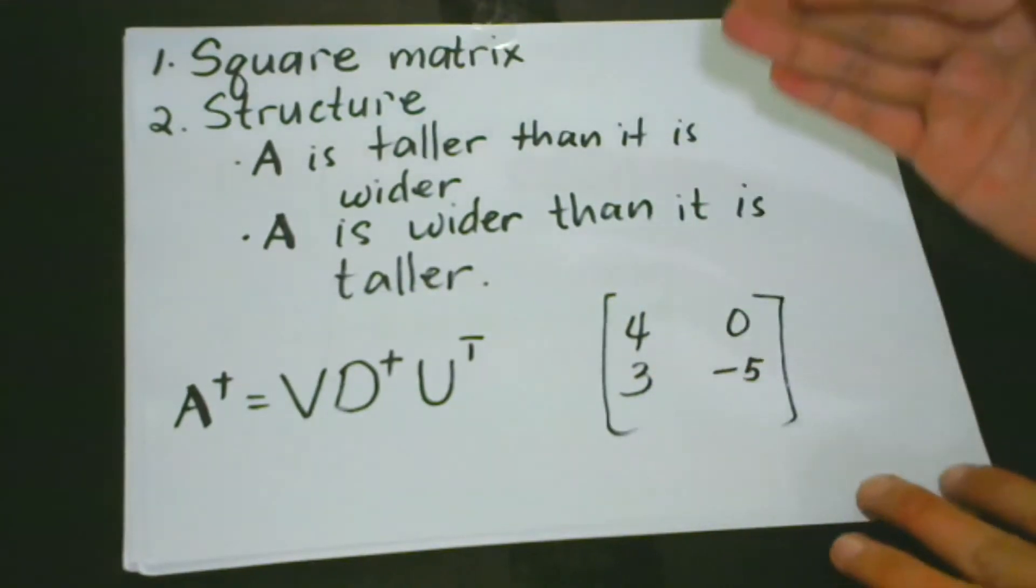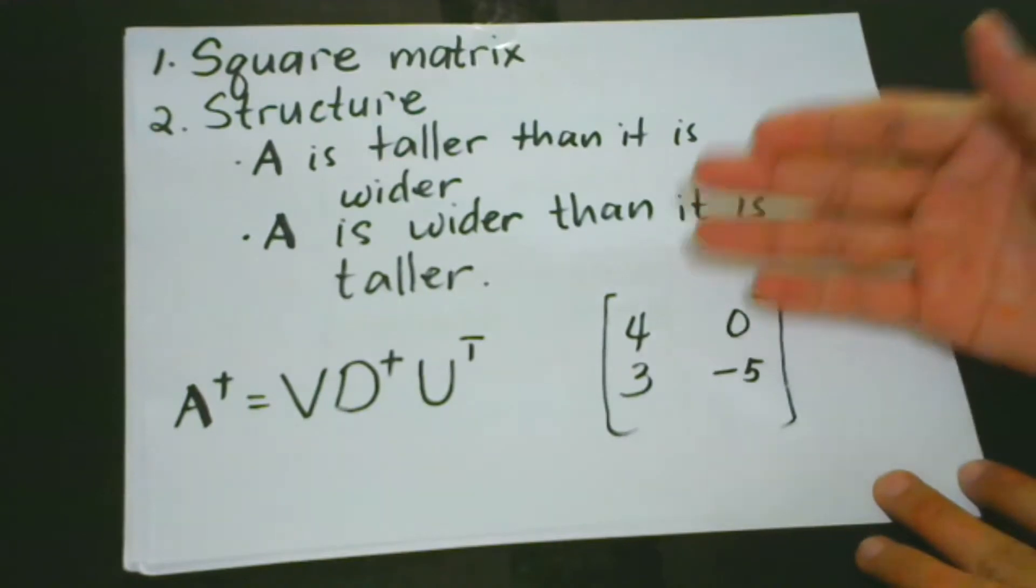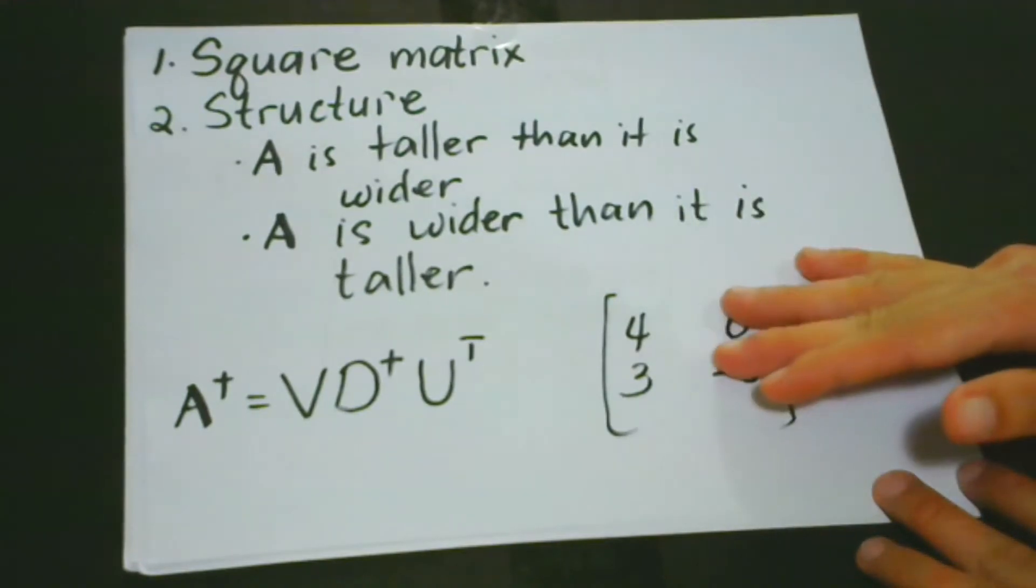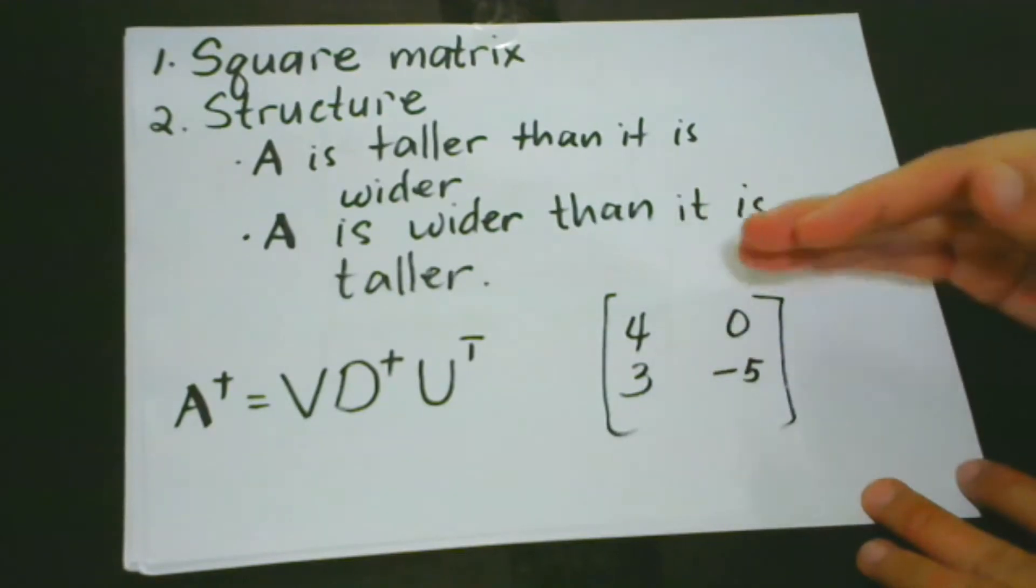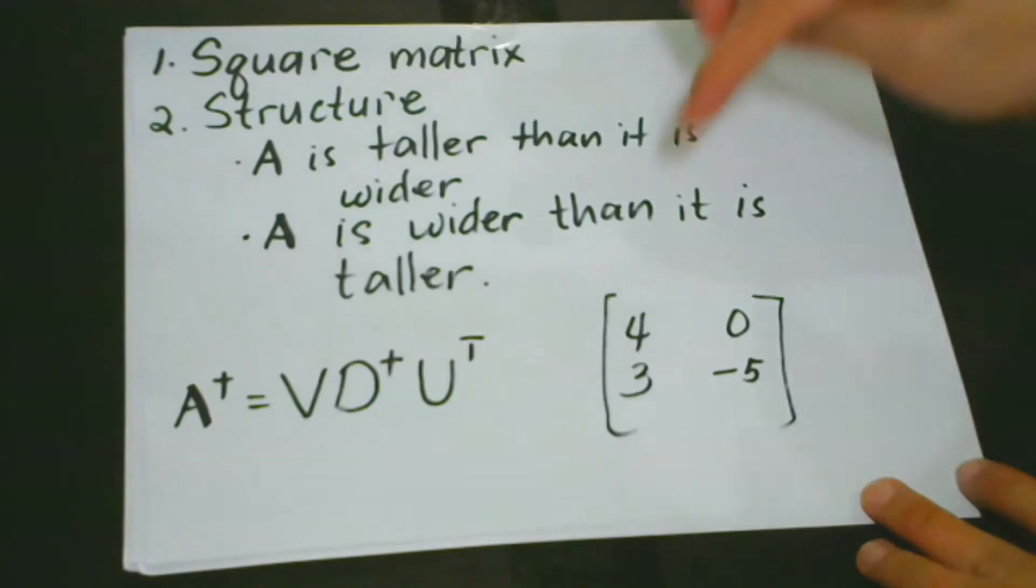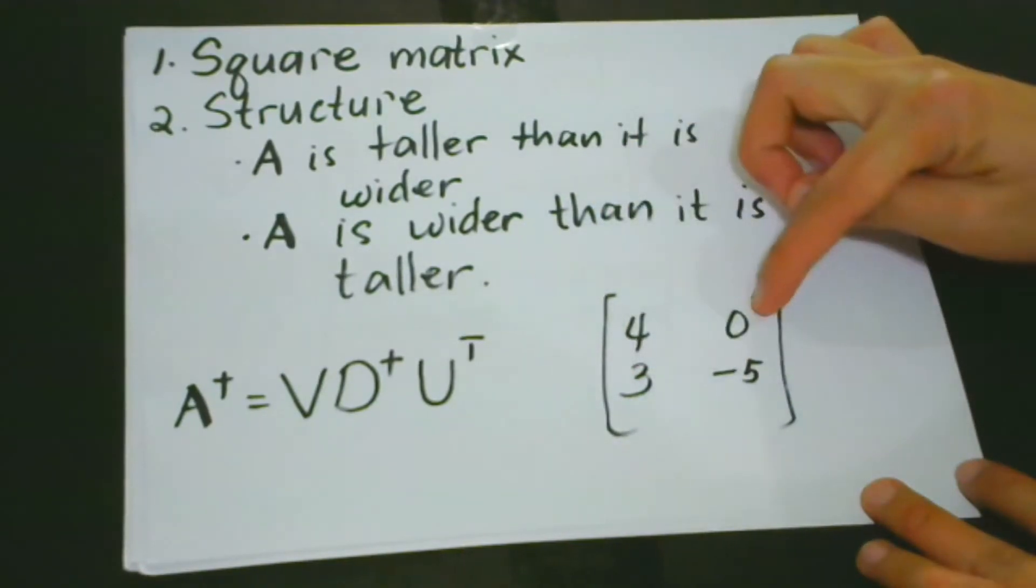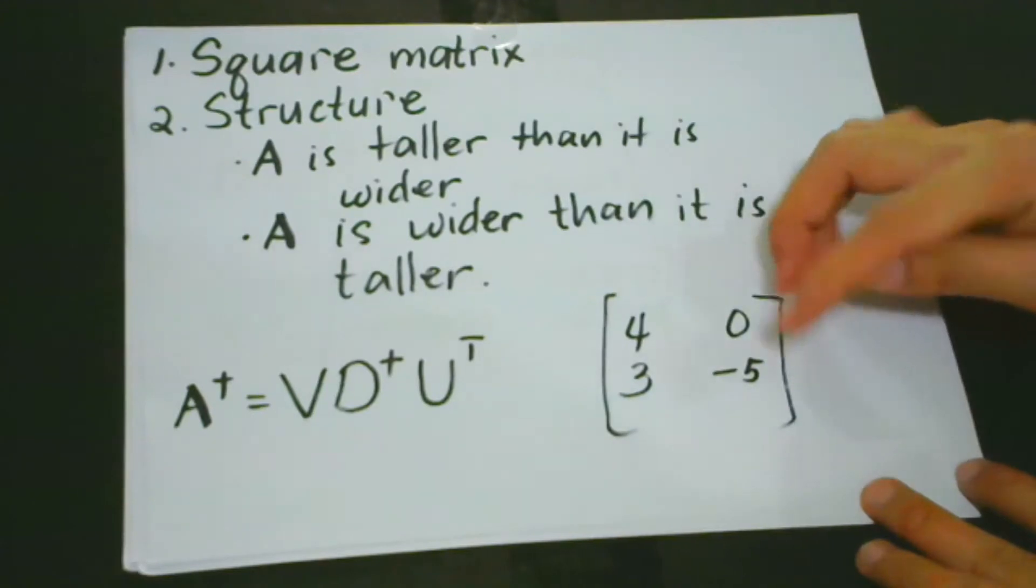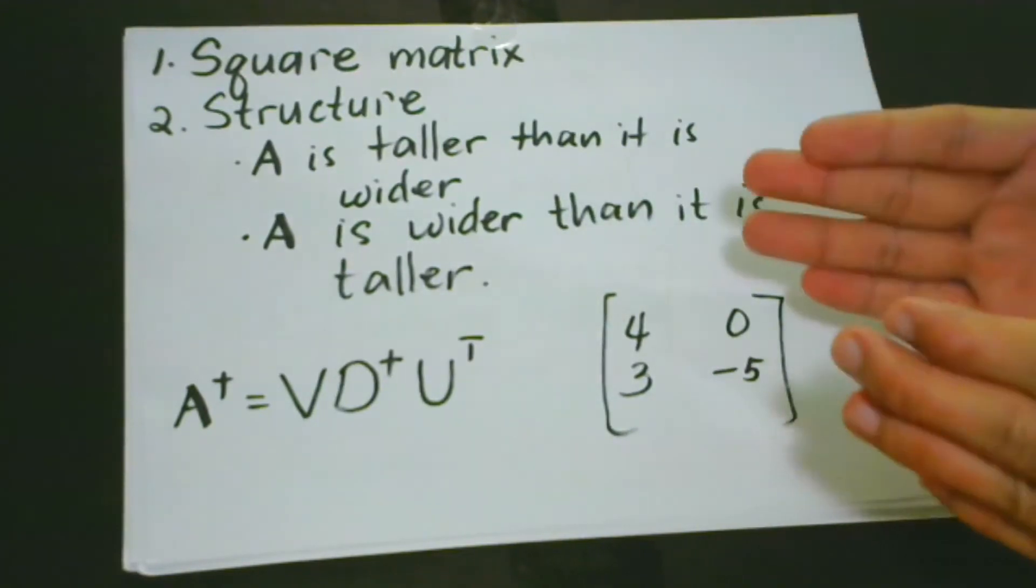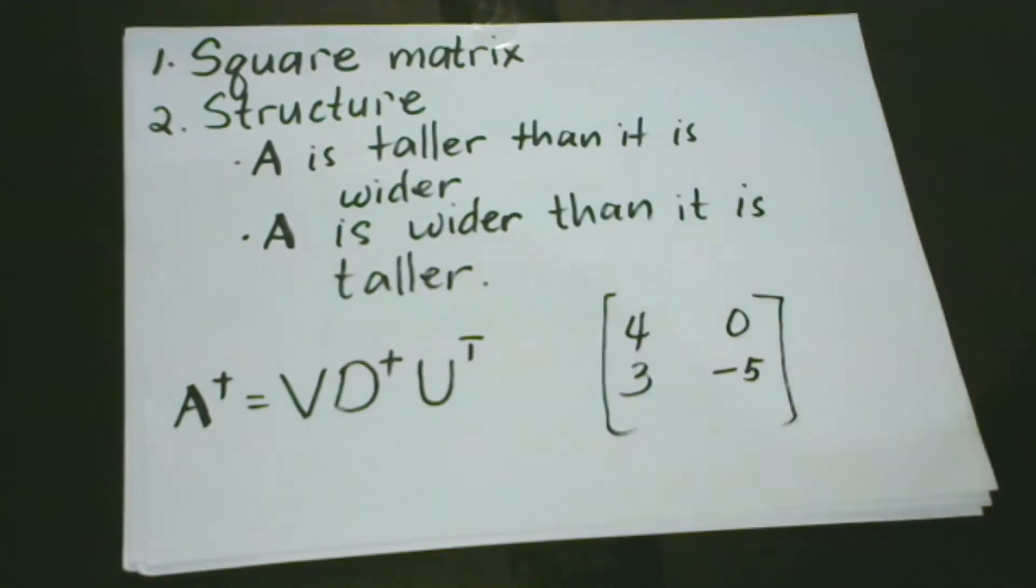The first thing is that matrix inversion only works if a matrix is a square matrix. So do you remember a square matrix? It has the same number of columns as the rows. For example, we have here, it has two rows, it has two columns, so it has the same number. So if it's not square matrix, then we have to find ways how to find its inverse.